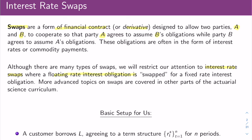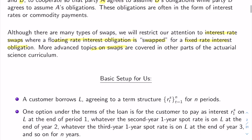In an interest rate swap, a floating rate interest obligation — where you might pay one interest rate in the first month and a different rate in the second month — is swapped for a fixed rate where you have the same interest rate all the time. There are more advanced topics on swaps covered later in the actuarial science curriculum, but for us the basic setup is as follows.